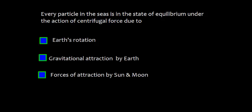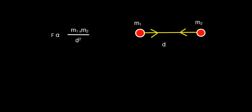This centrifugal force is caused due to earth's rotation, gravitational attraction by earth, and forces of attraction by sun and moon. We also know that the force of attraction between two masses, m1 and m2, is directly proportional to their product, m1 times m2, and inversely proportional to the square of the distance, d squared. That is the law of gravitational forces.